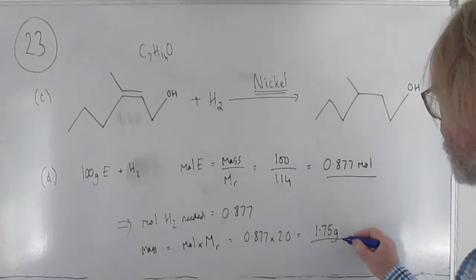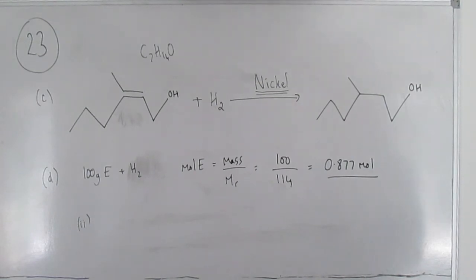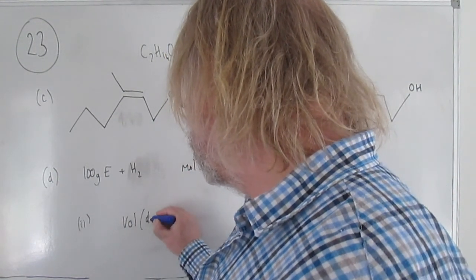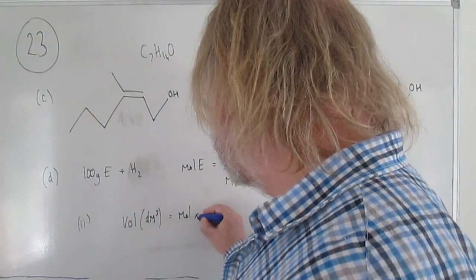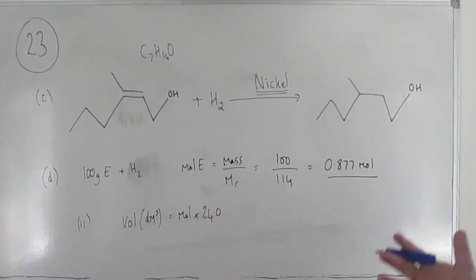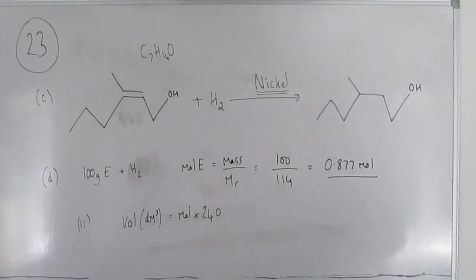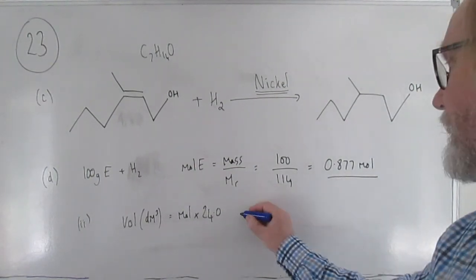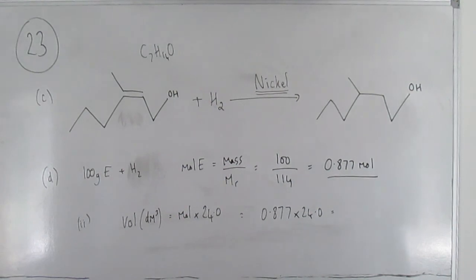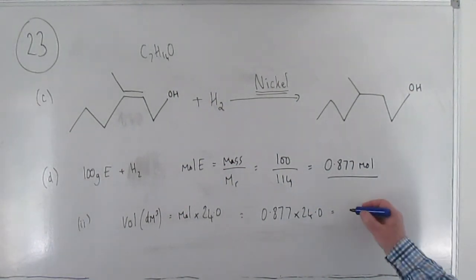Part 2 wants the volume of hydrogen. The key phrase is 'room temperature and pressure' — as soon as you see that, the key relationship is: volume (dm³) = moles × 24.0. That molar volume of 24 dm³/mol at RTP is on your data sheet. So: 0.877 × 24.0 = 21.1 dm³.